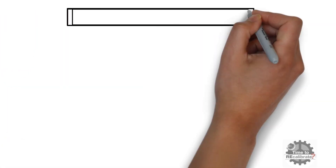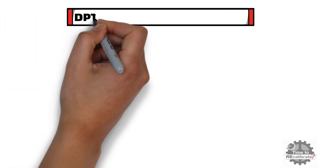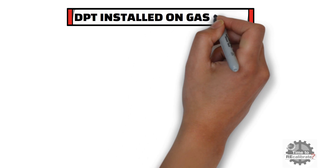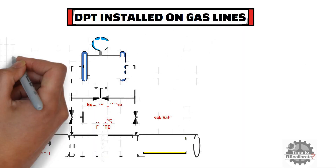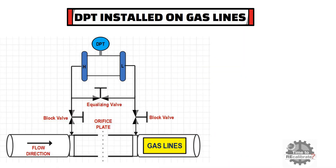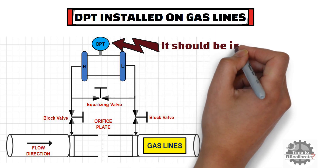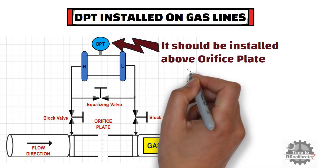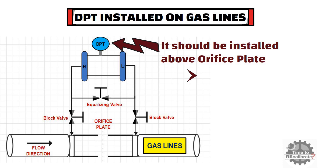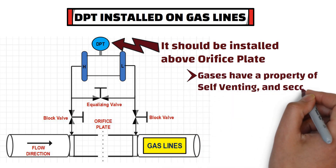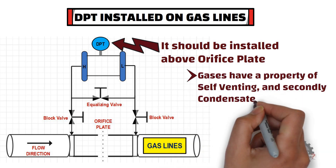Now let's take the situation when a differential pressure transmitter is installed on gas lines. As you can see from the diagram, for gas lines, the DP transmitter should be installed above the orifice plate. The reason behind this is that gases have a property of self-venting, and secondly to avoid condensate formation.